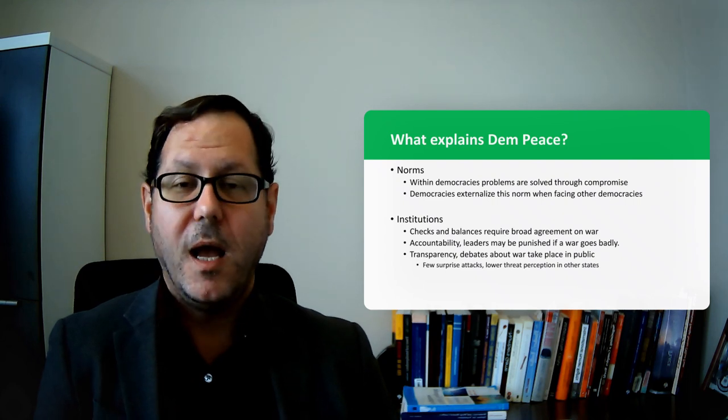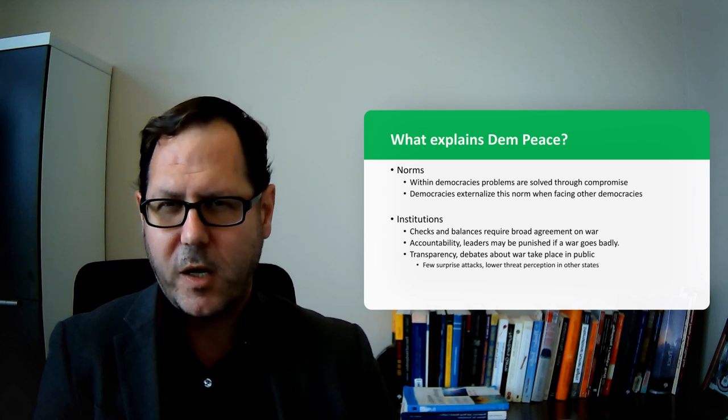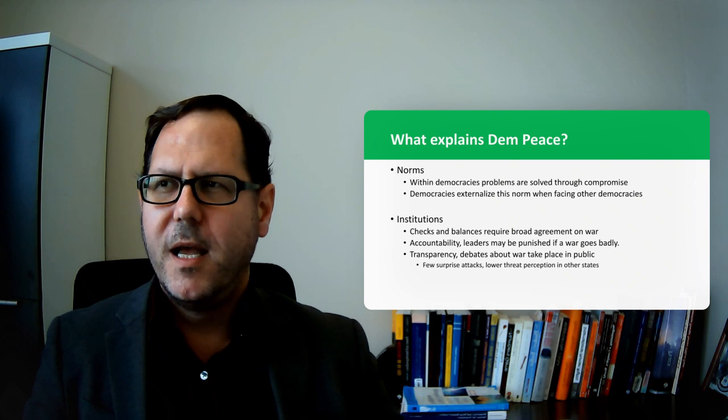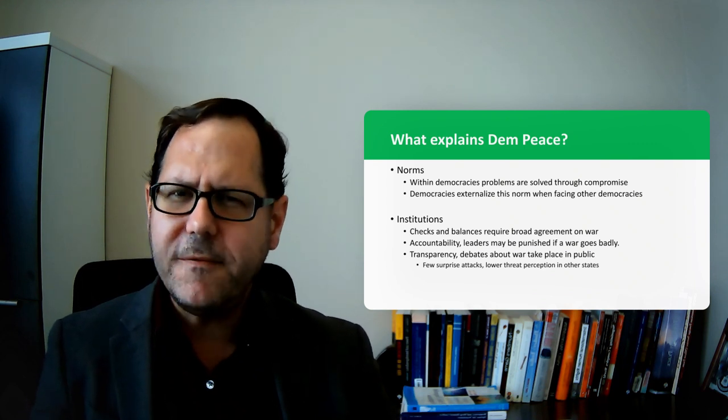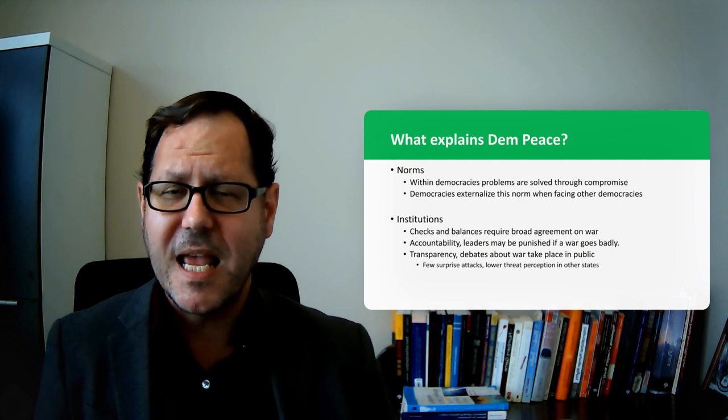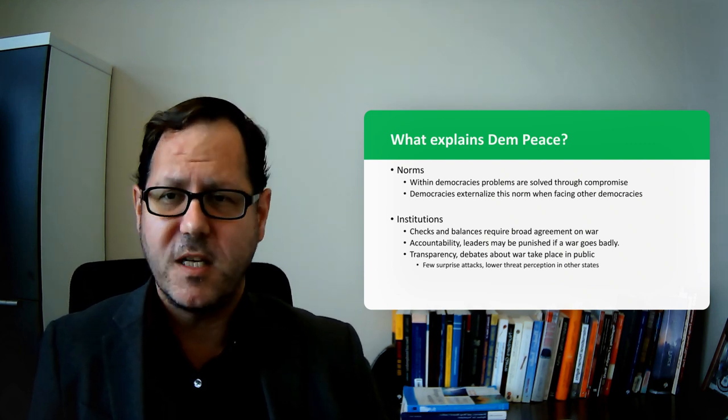But folks who argue that maybe democratic peace really does have something behind it tend to organize their arguments in terms of either norms or in terms of institutions. And so when we're talking about norms, we're talking about something about how democracies operate, shaping the beliefs of democratic leaders and the beliefs of democratic societies in a way that leads them to resolve their differences without compromise.